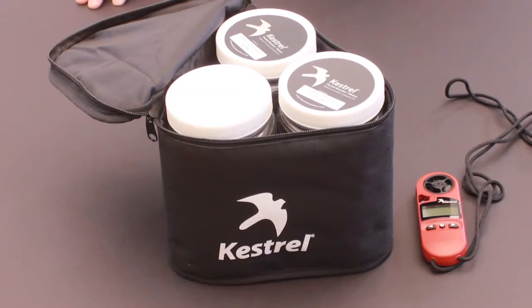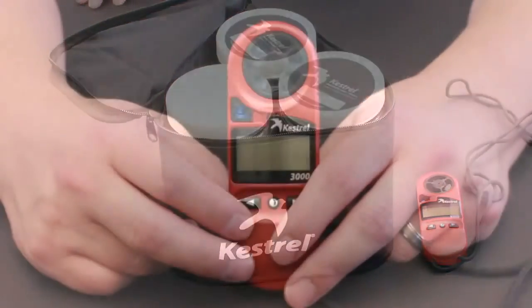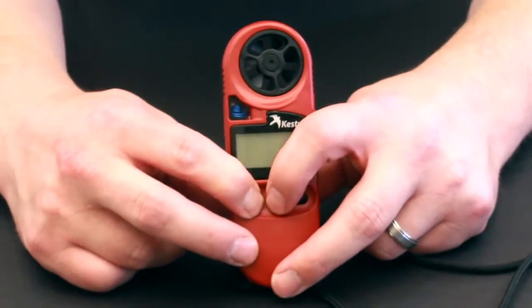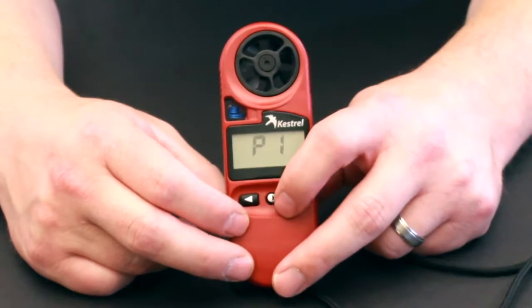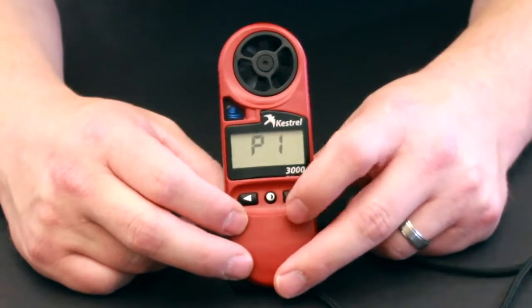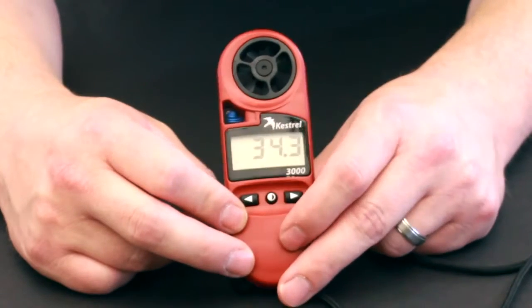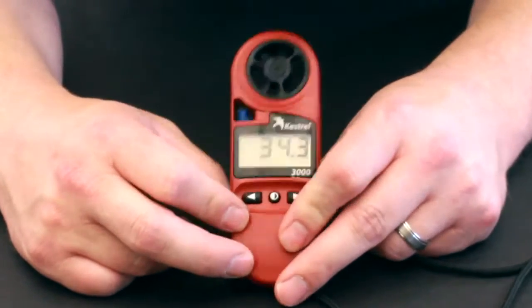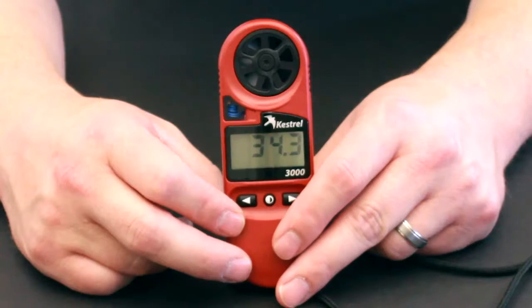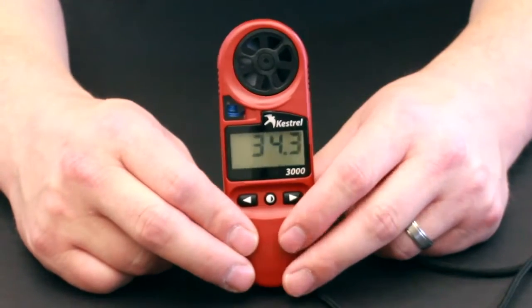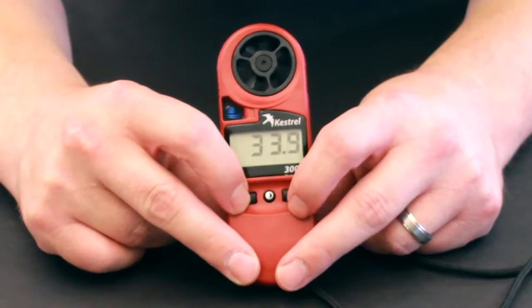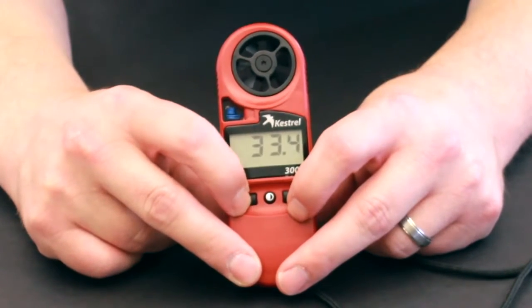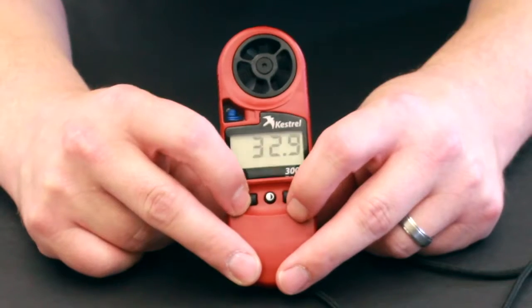This will work with any of the Kestrel 123s that have humidity in them. You will start by hitting the left button with the center button so that P1 appears. Now, we have to enter the first value of the first chamber. It should be programmed in. We hit the center button, and we see that it displays 34.3. We need to make this 32.8, so we're going to hit the left button until it goes down to the proper humidity for the first chamber.